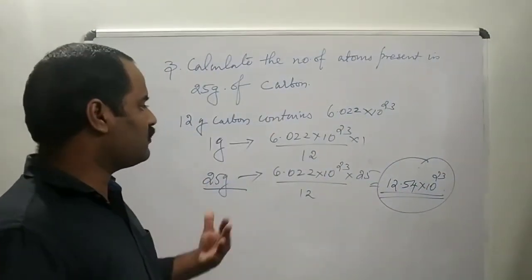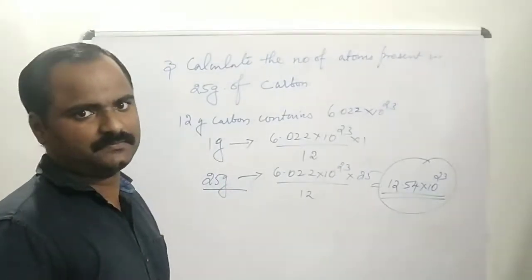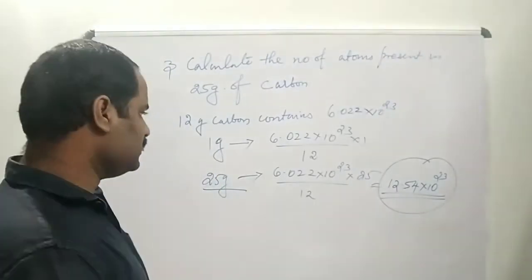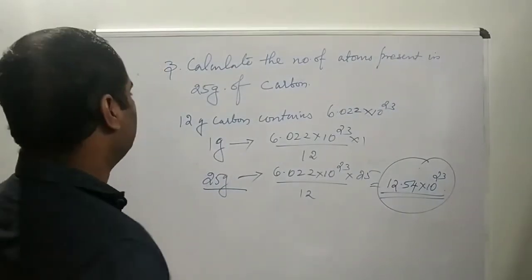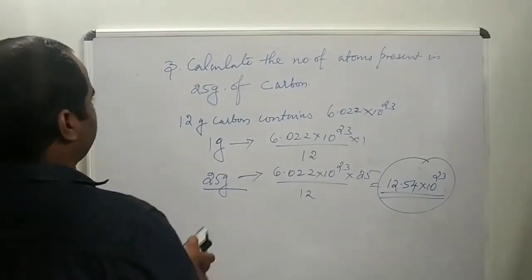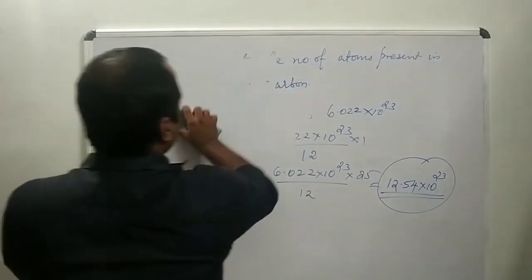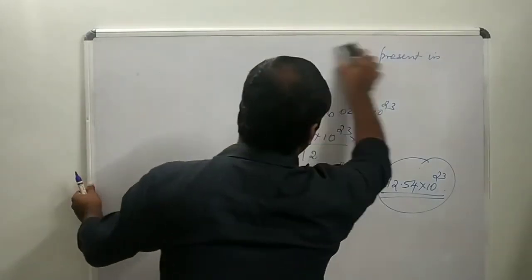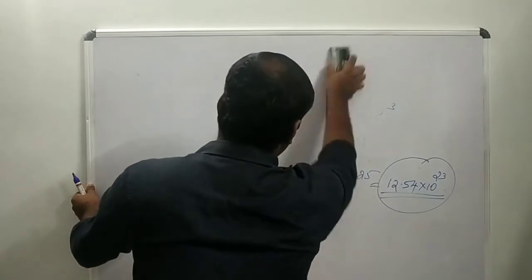That means 25 grams of carbon is almost 2 moles of carbon. We can now move on to the fourth question.